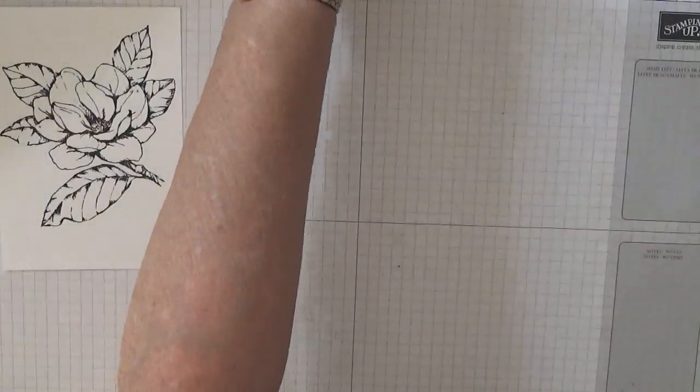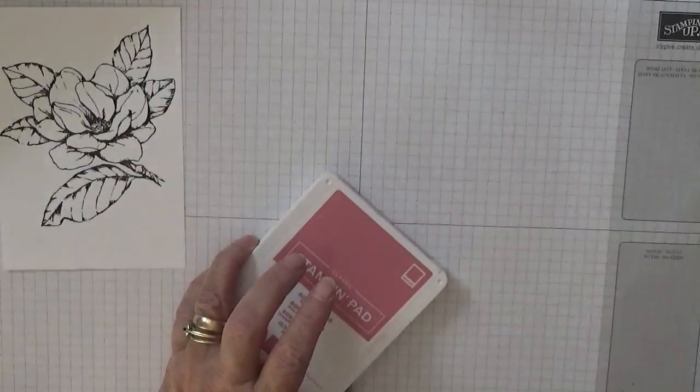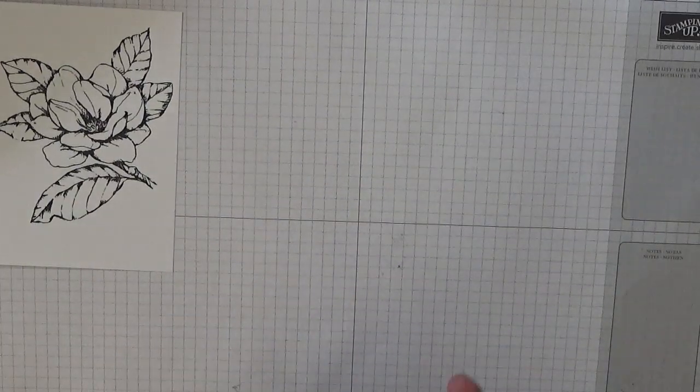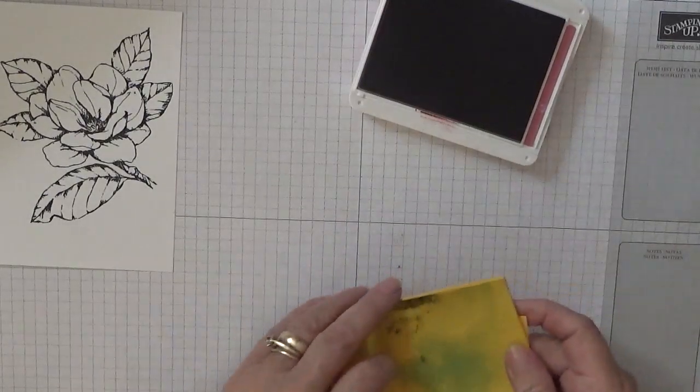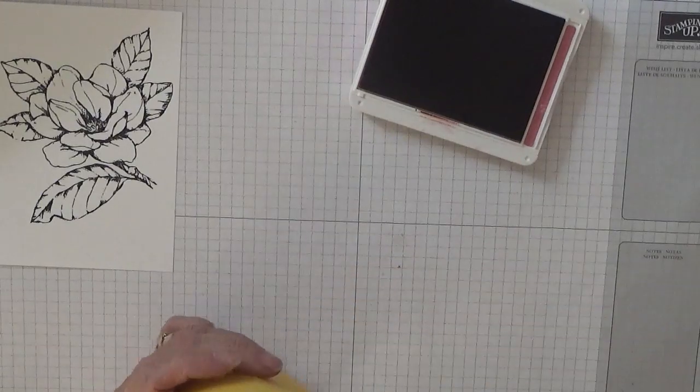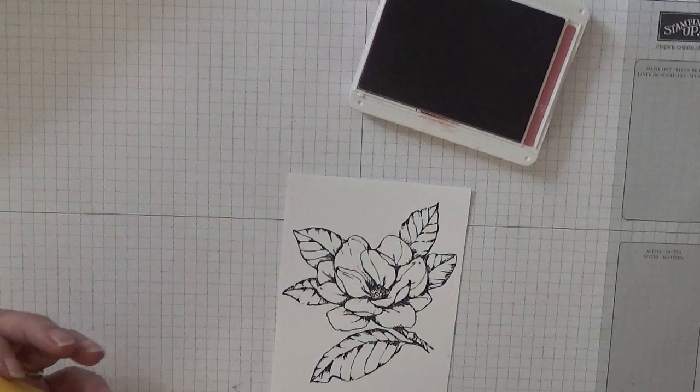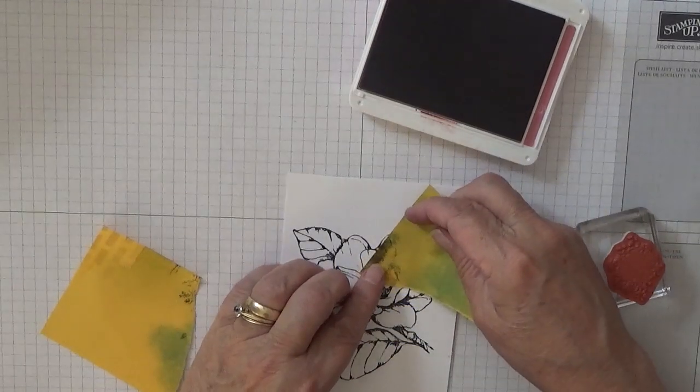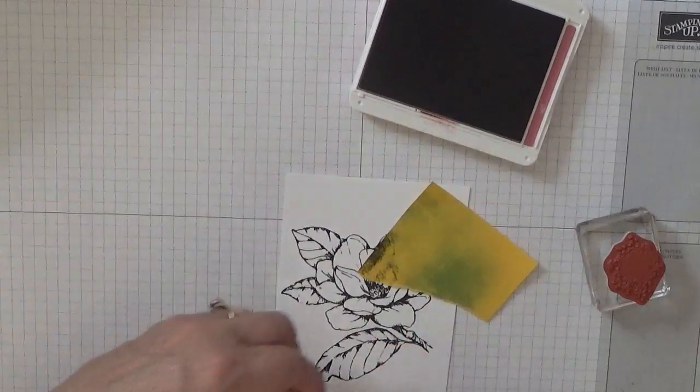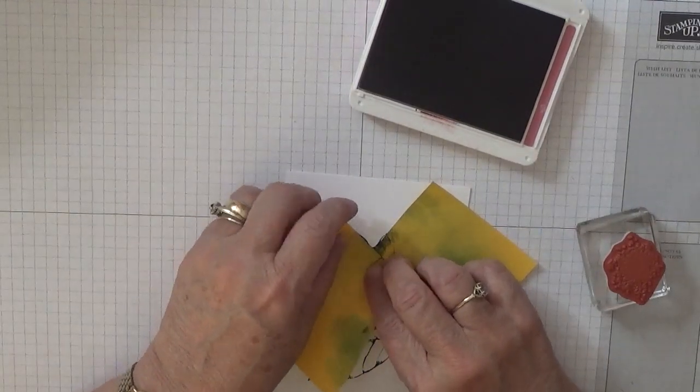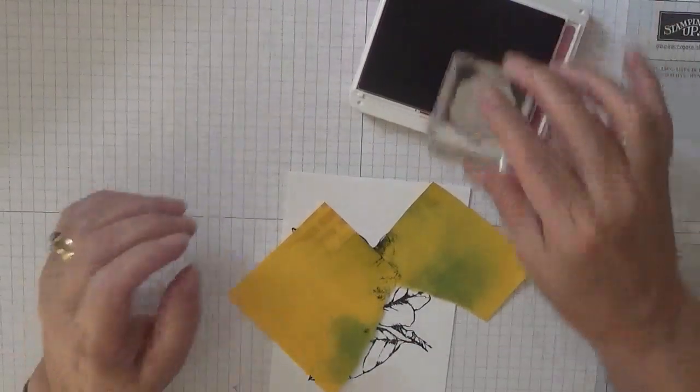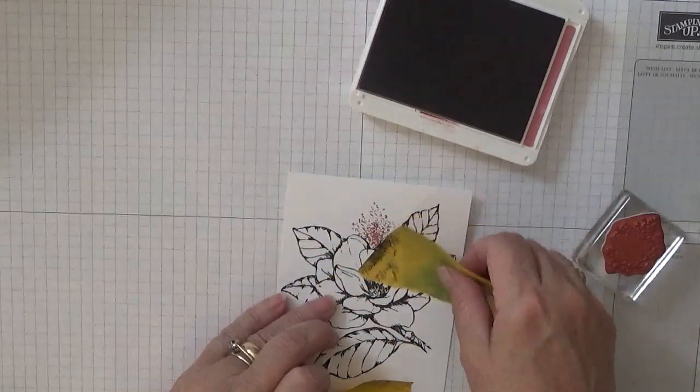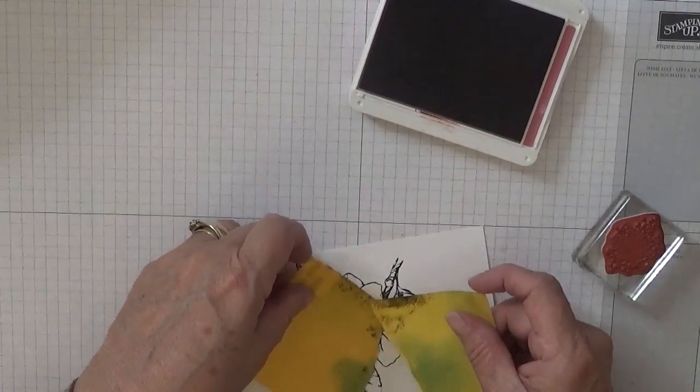And then we need Rococo Rose and a post-it note. This bit will do. And the splatter stamp. And what I did was just cover up the petals there, because I didn't want Rococo Rose to go on the petals, and stamp it off. We will get quite an abrupt stop to it.